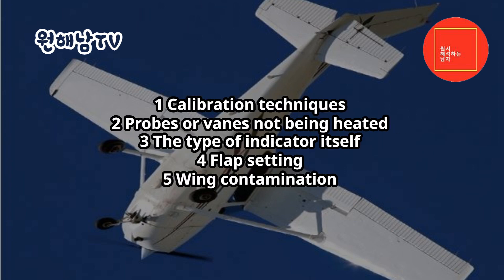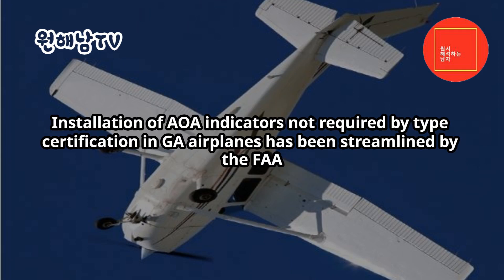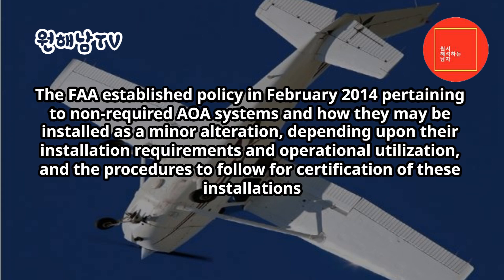Some items that may limit the effectiveness of an AOA indicator are: 1. Calibration techniques. 2. Probes or vanes not being heated. 3. The type of indicator itself. 4. Flap setting. 5. Wing contamination. Installation of AOA indicators not required by type certification in GA airplanes has been streamlined by the FAA. The FAA established policy in February 2014 pertaining to non-required AOA systems and how they may be installed as a minor alteration depending upon their installation requirements and operational utilization.